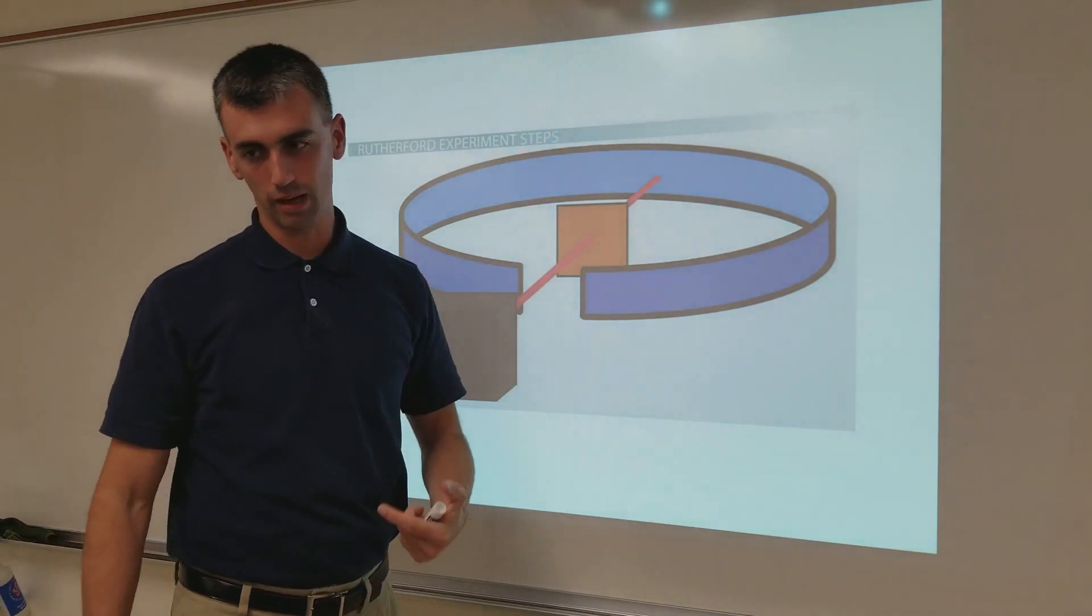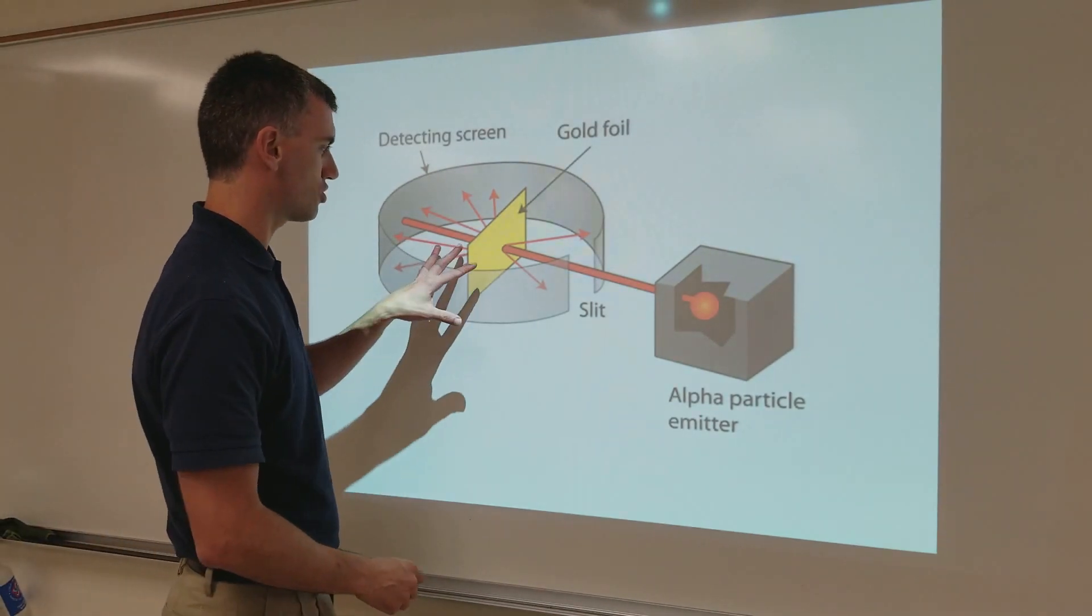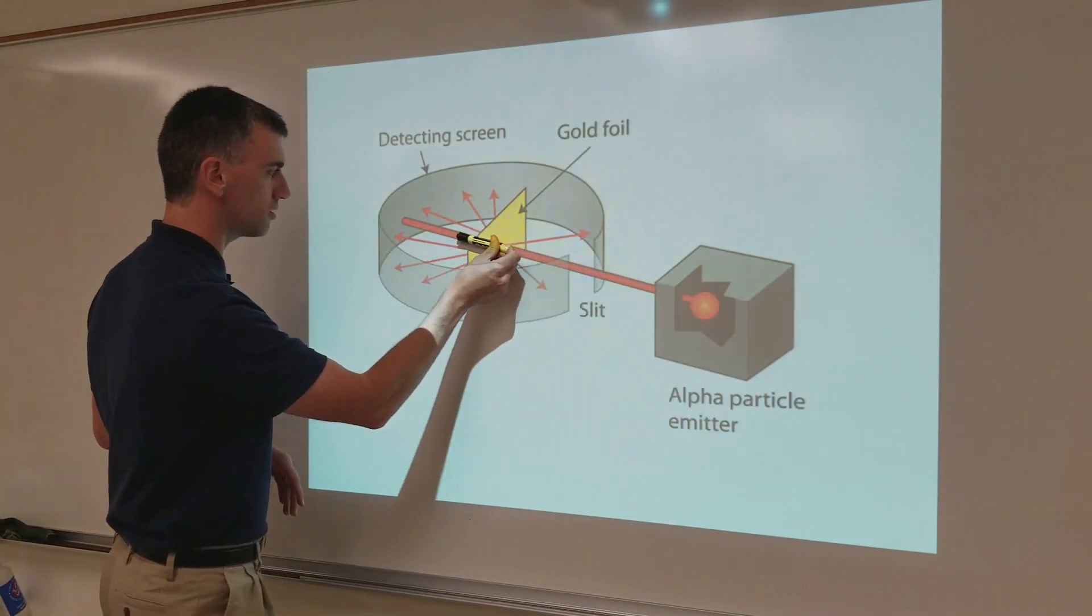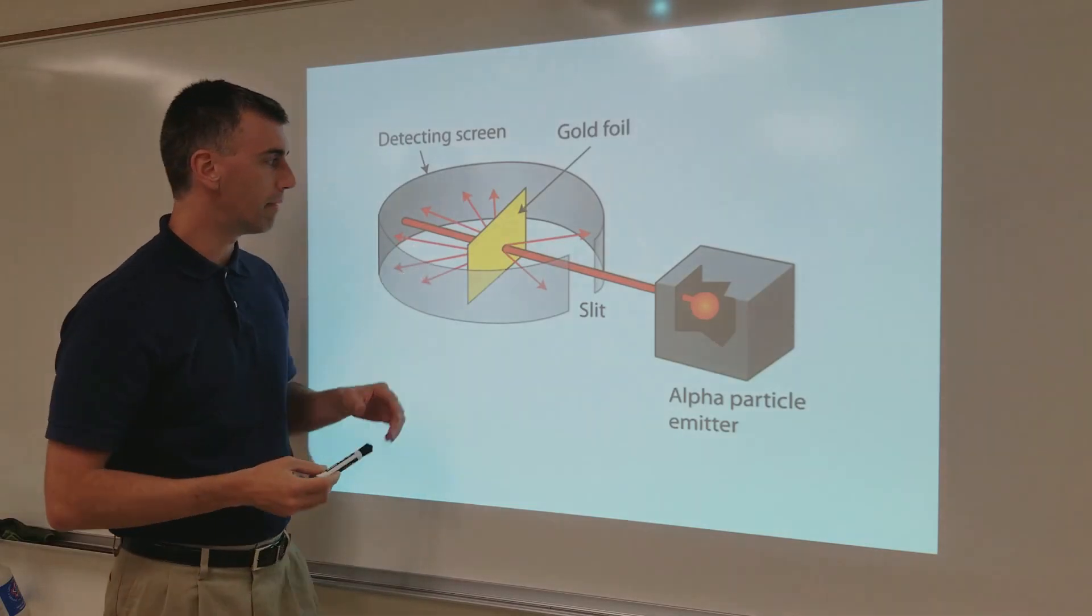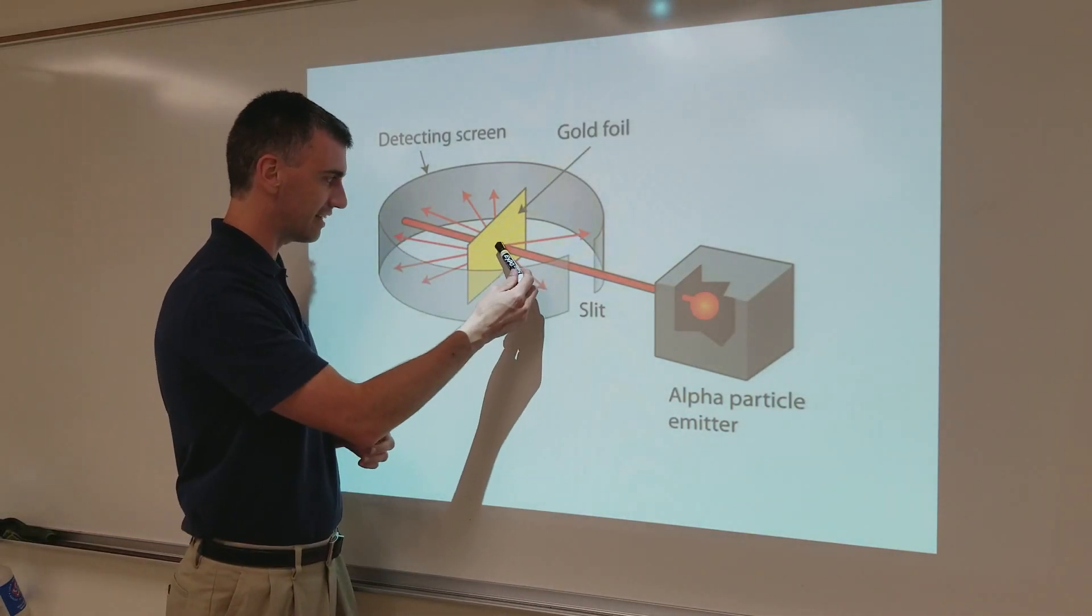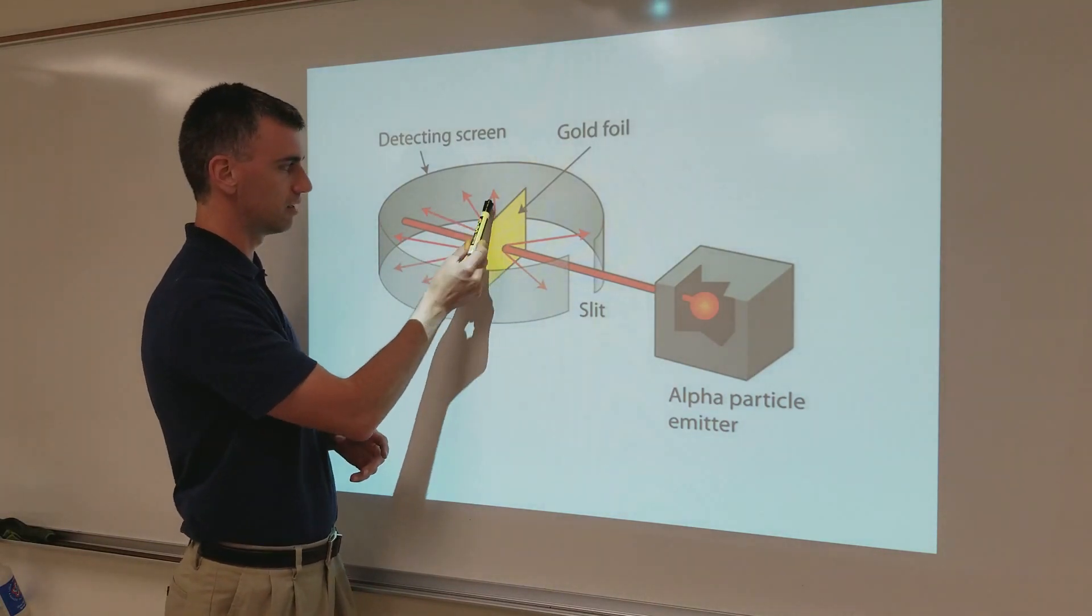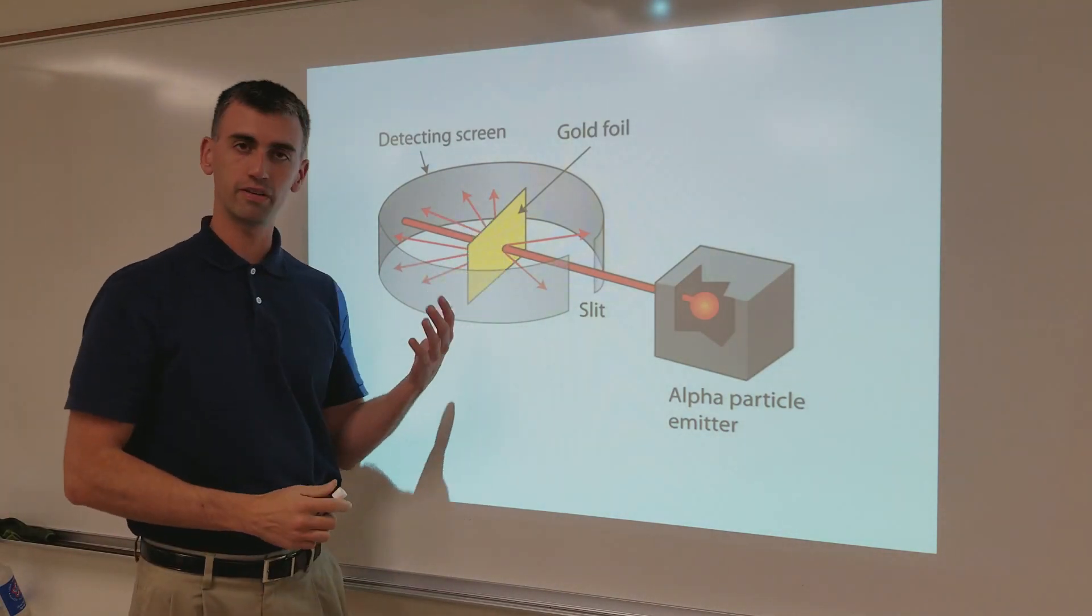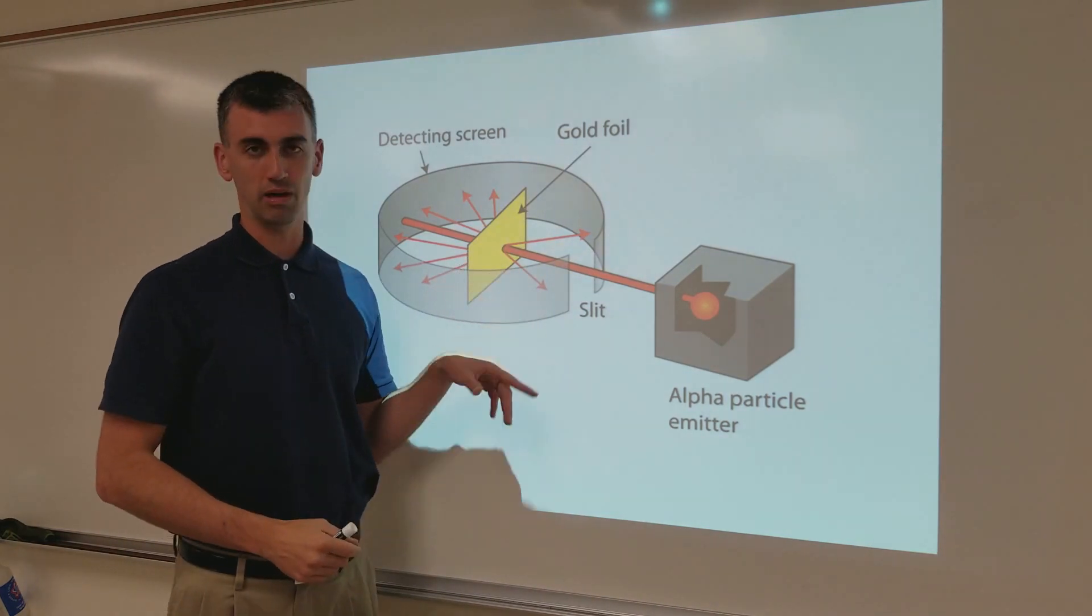So, what actually happened was different than that. Okay, this diagram is showing, yes, most of those particles did go straight through. But, a notable minority did not. They went off to the side a little bit, that's called being deflected. Or were, it's called very strongly deflected, a.k.a. bounced back.